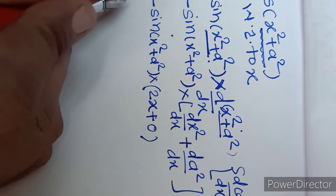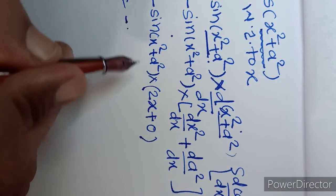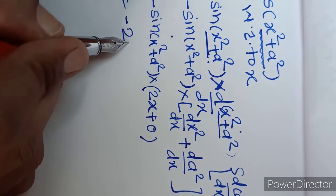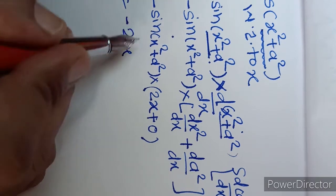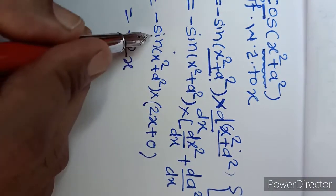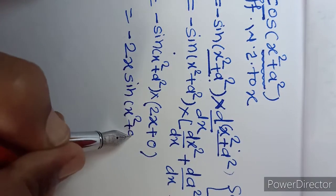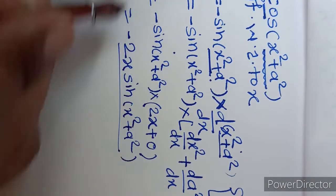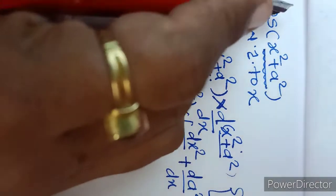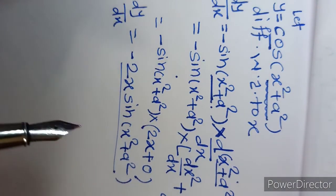In general, when there is a constant or a numeric coefficient, we write it in front. So the final answer is dy/dx = minus 2x into sin(x² + a²). That is the required derivative of the given function.